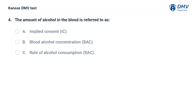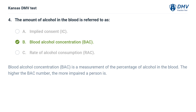The amount of alcohol in the blood is referred to as: A. Implied consent. B. Blood alcohol concentration. C. Rate of alcohol consumption. The answer is B. Blood alcohol concentration. Blood alcohol concentration is a measurement of the percentage of alcohol in the blood. The higher the number, the more impaired a person is.